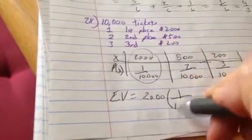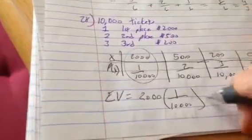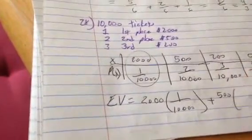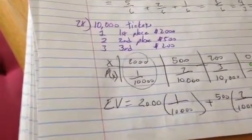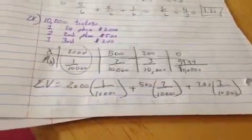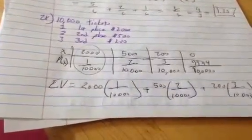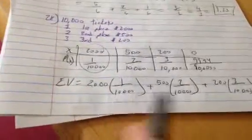2,000 times 1 over 10,000, plus 500 times 2 over 10,000, plus 200 times 3 over 10,000. And then we'll get that, so if I just do, all the bottoms are 10,000,